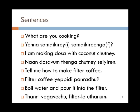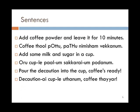Tell me how to make filter coffee — filter coffee eppidi panradi. First we boil water and then pour it into the filter: tanni vega veccha filter la ootanum. Tanni is water, vega veccha is to boil, ootanum is to pour. Then add coffee powder and leave it for 10 minutes: coffee tul pootu patthu nimisham veccha. Tul is powder, pootu is to add, patthu is ten, nimisham is minutes.